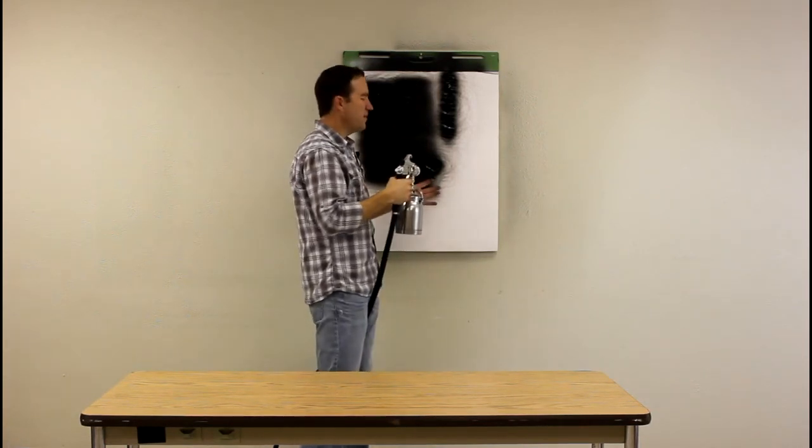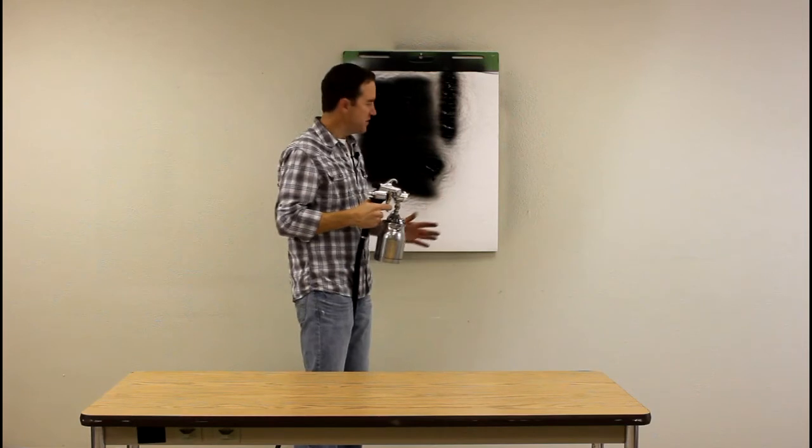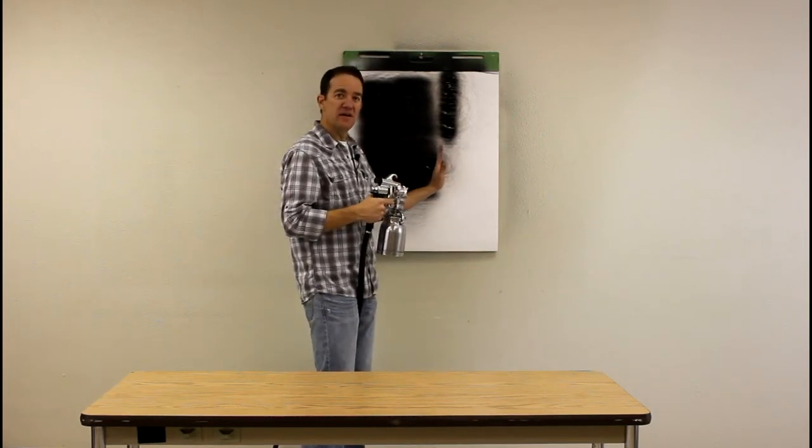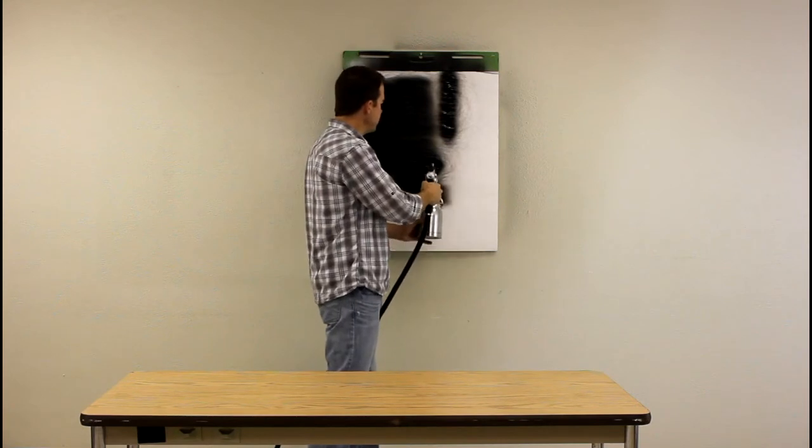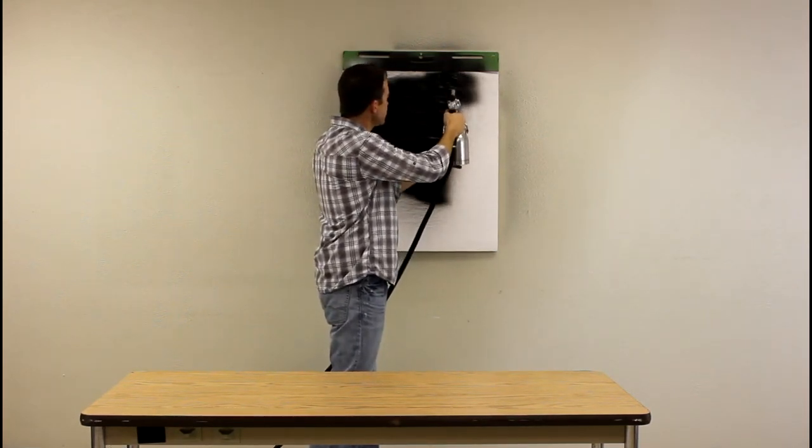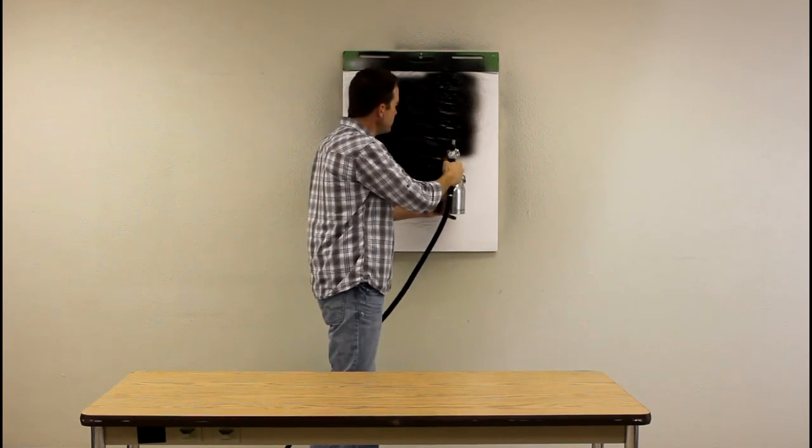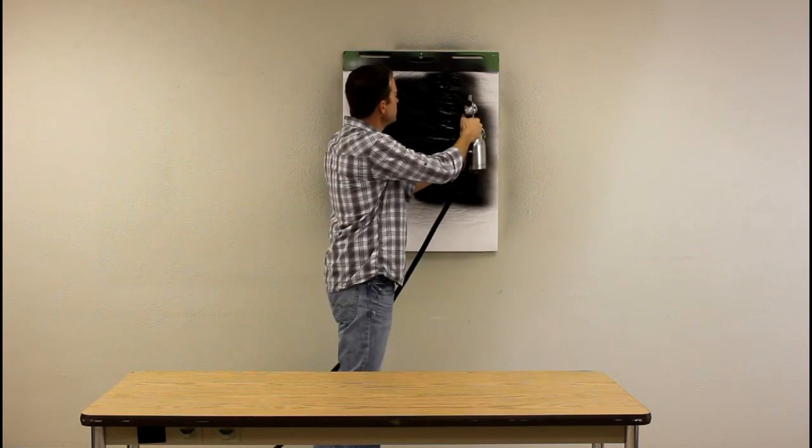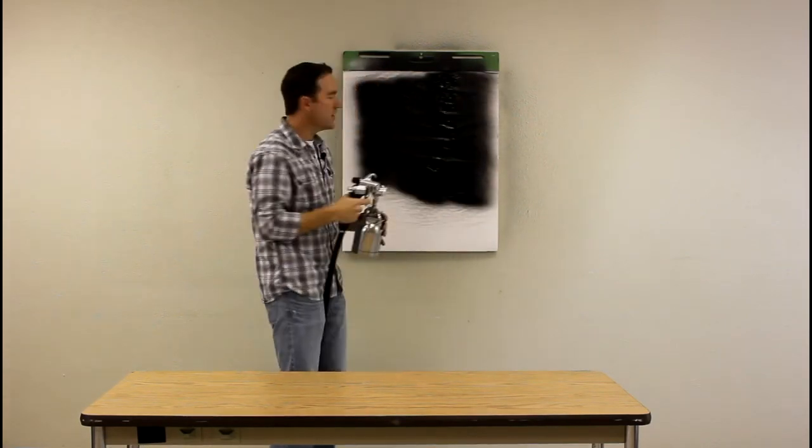And normally when you're spraying you want to be about six to eight inches away from the surface and you want to overlap by about 50% as you make your pass. So it's pretty basic.